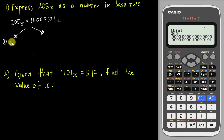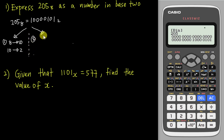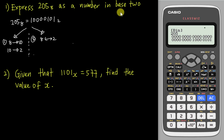If you want to do it manually without the calculator, there are two methods. The first method is to convert from base 8 to base 10 first, and then from base 10 to base 2. This takes some time. The second method is faster but requires you to know the relationship between base 8 and base 2, using a reference table.